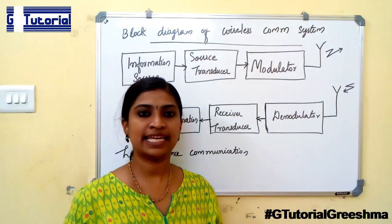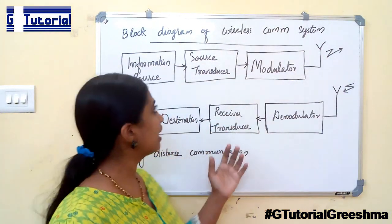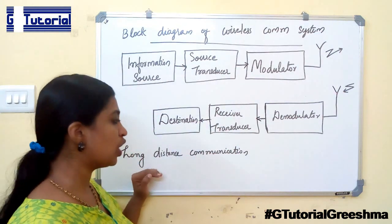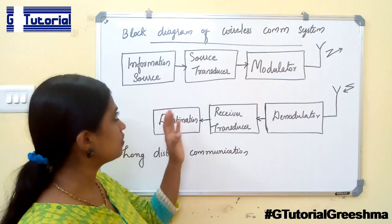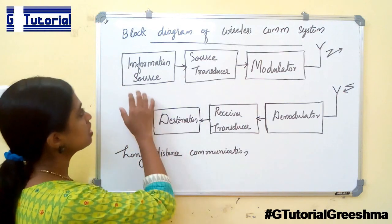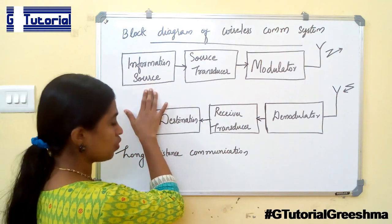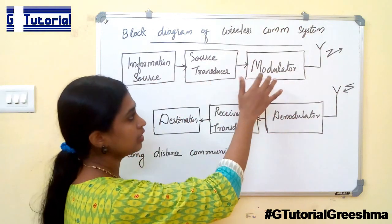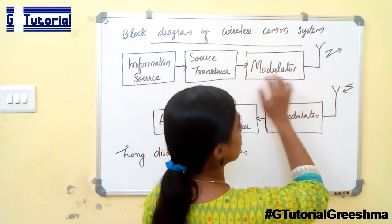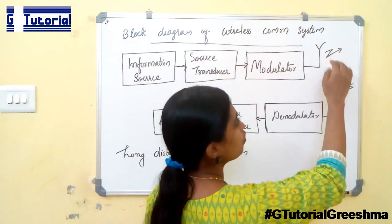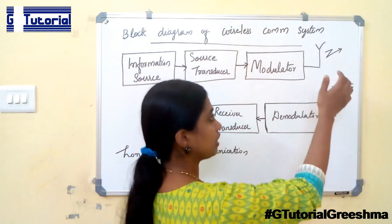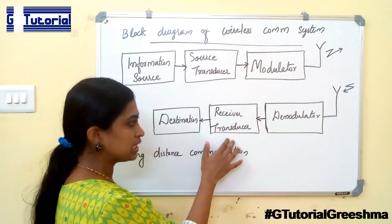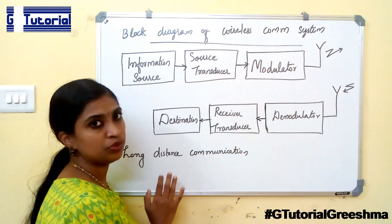Now let us see the block diagram of a wireless communication system. Wireless communication is mainly used for long-distance communication. It involves the following blocks: the source section involves the information source, source transducer, and modulator. The signal is transmitted through free space. At the receiver, the demodulator demodulates the signal, then it is sent to the receiver transducer and finally to the destination.